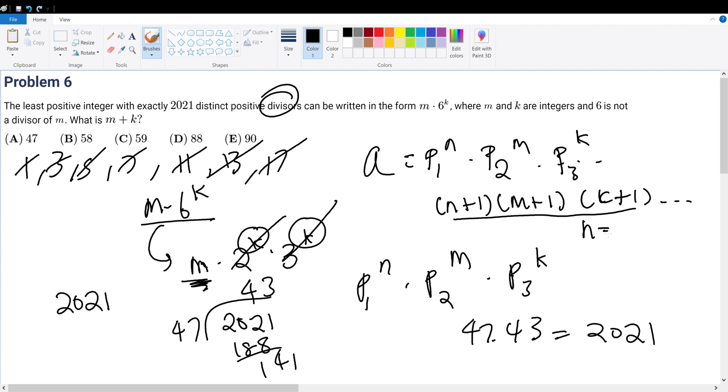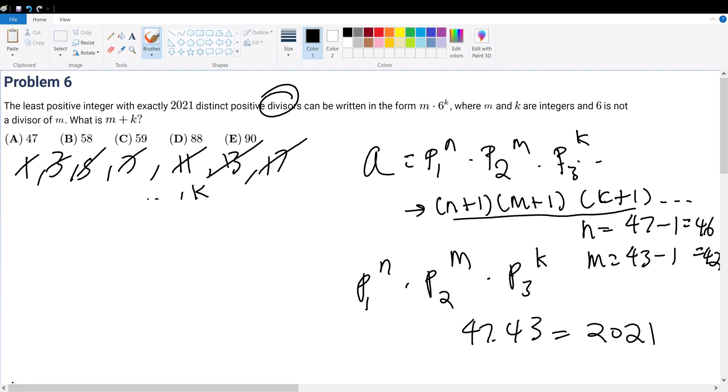With that, we know that n has to be equal to 47 minus 1 and m is equal to 43 minus 1, because of this formula right here. So that's equal to 46 and that's equal to 42.